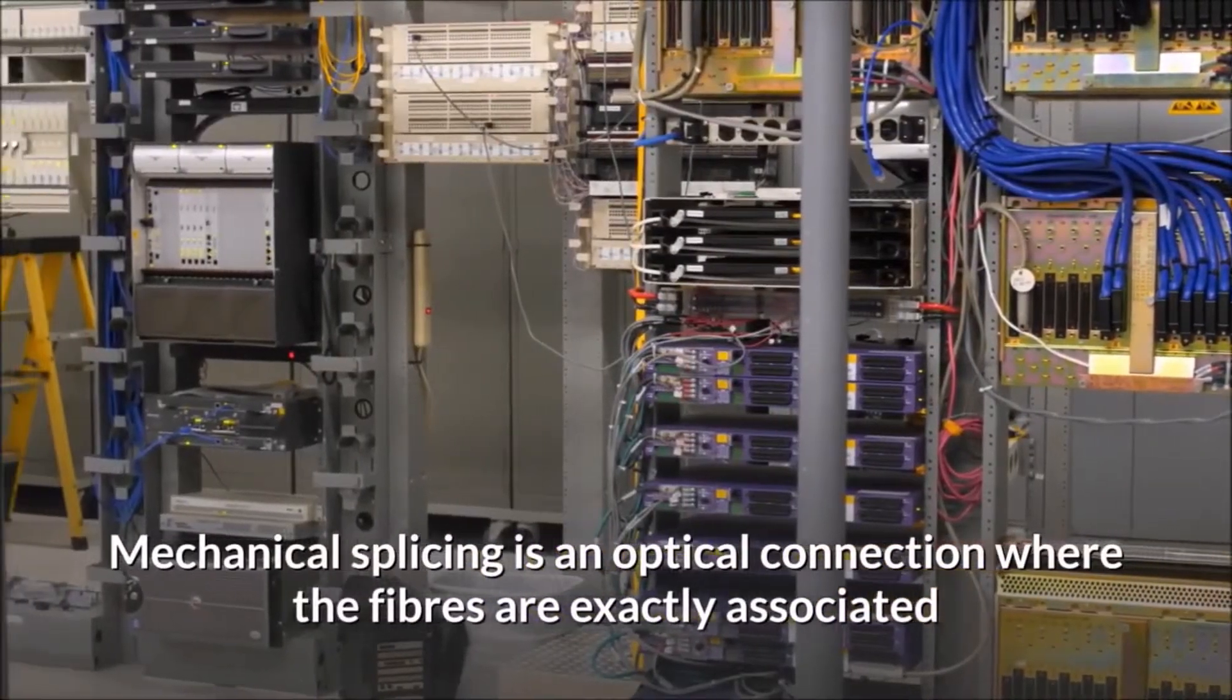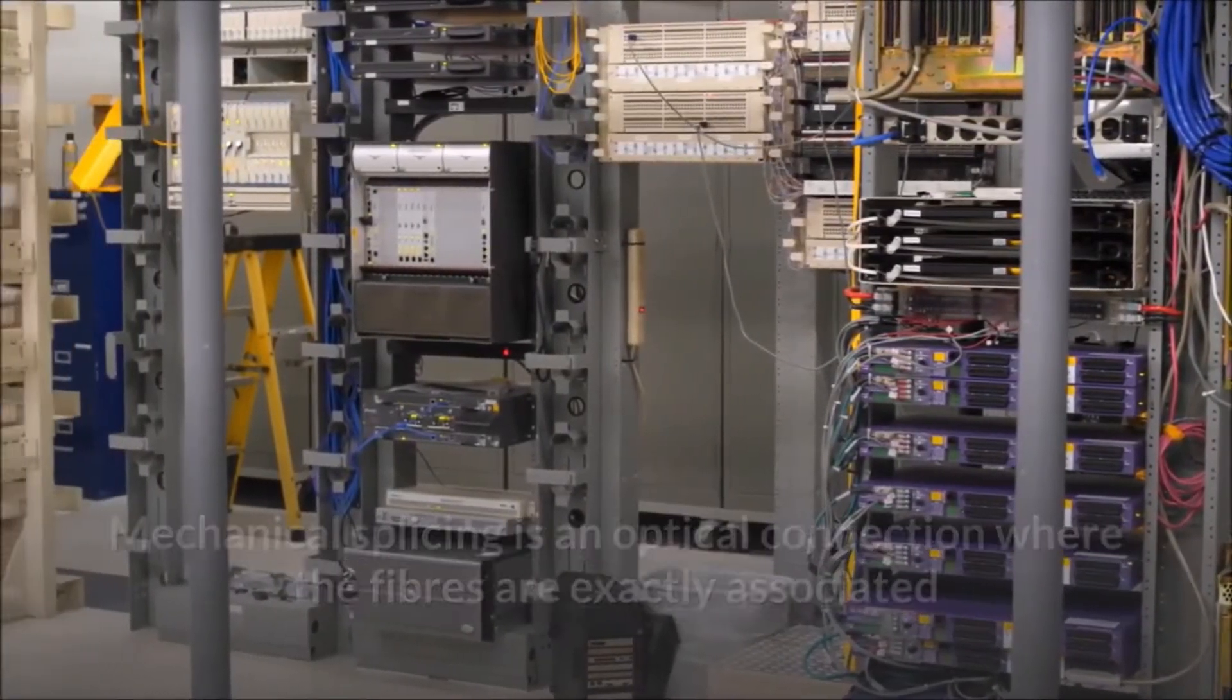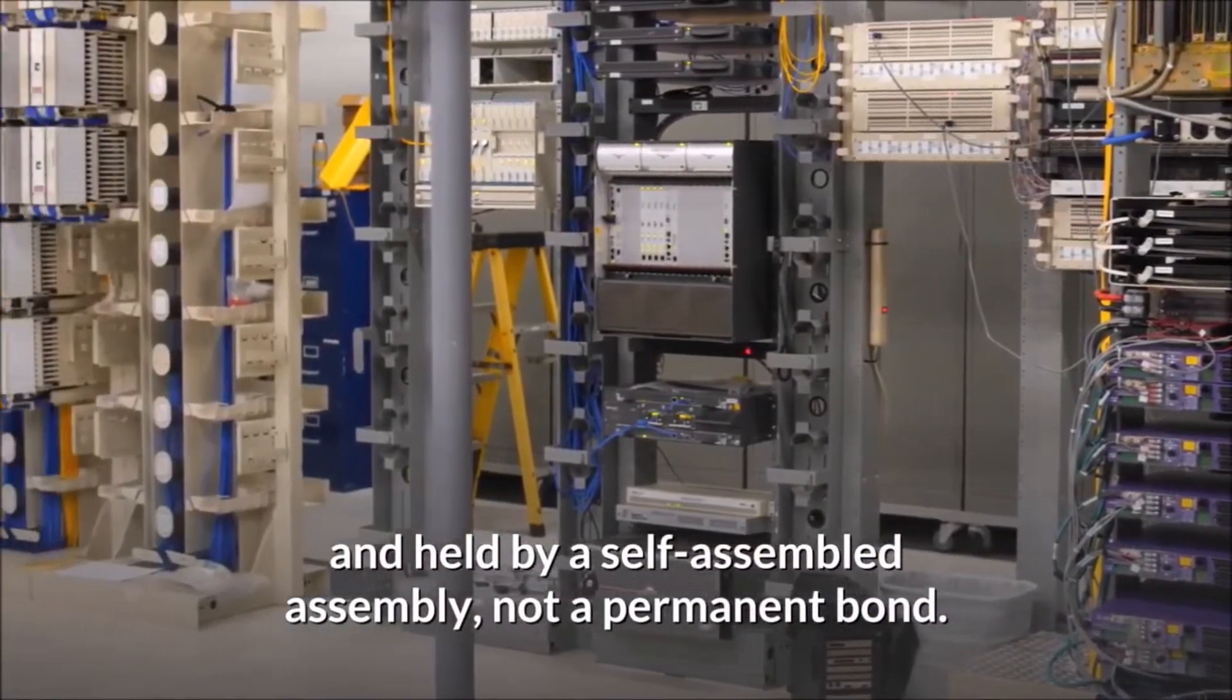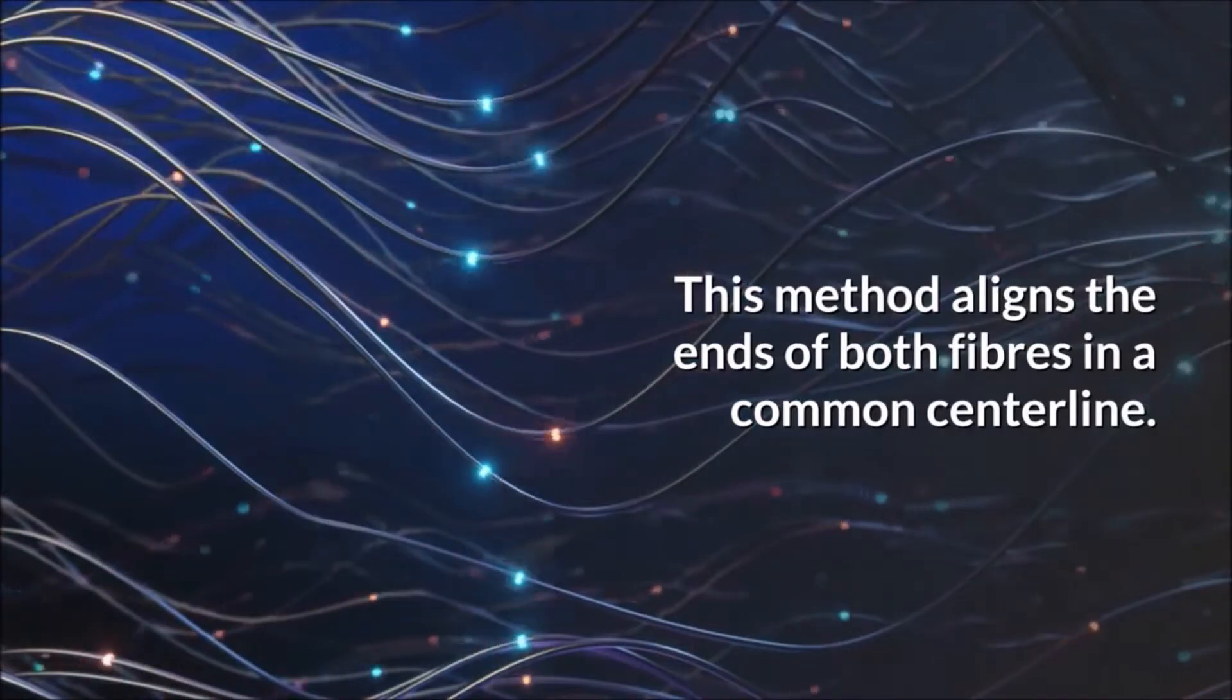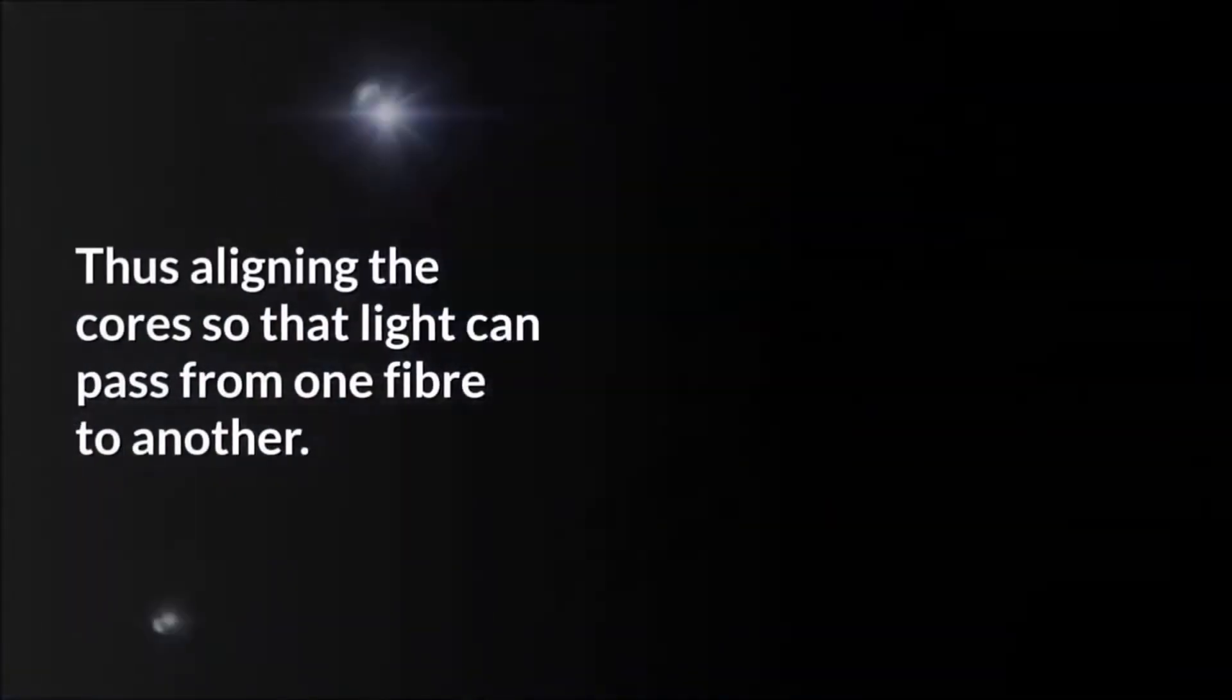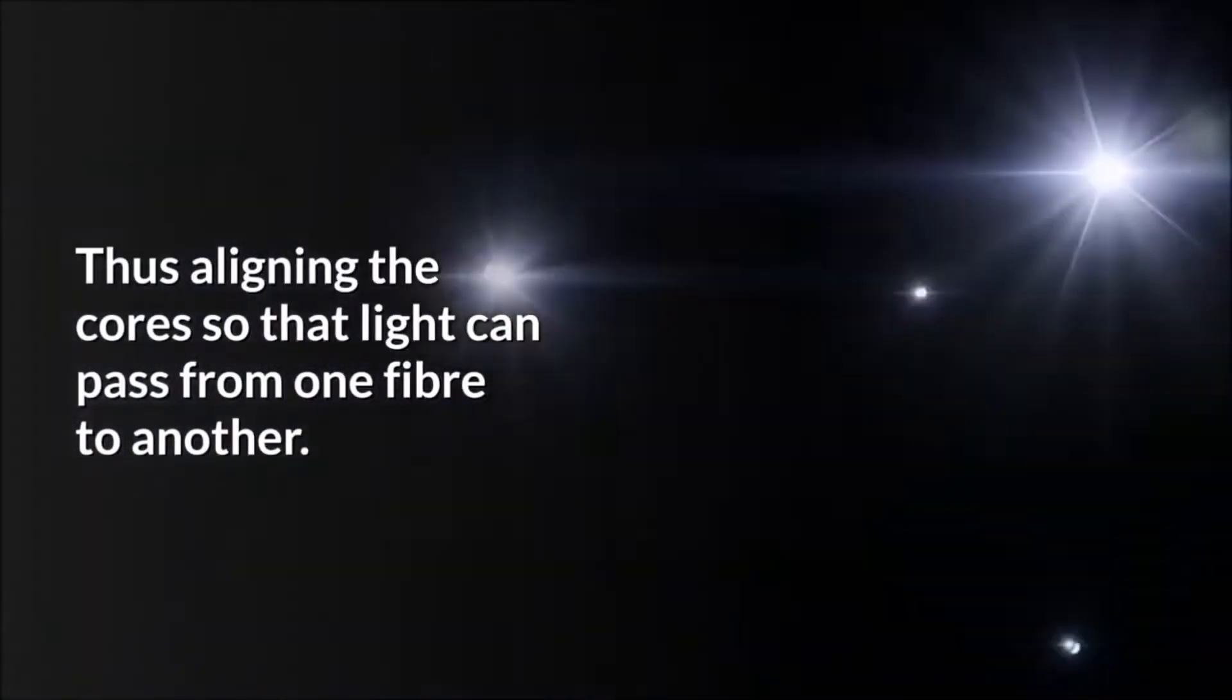Mechanical splicing method. Mechanical splicing is an optical connection where the fibers are exactly associated and held by a self-assembled assembly, not a permanent bond. This method aligns the ends of both fibers in a common centerline. Thus aligning the cores so that light can pass from one fiber to another.